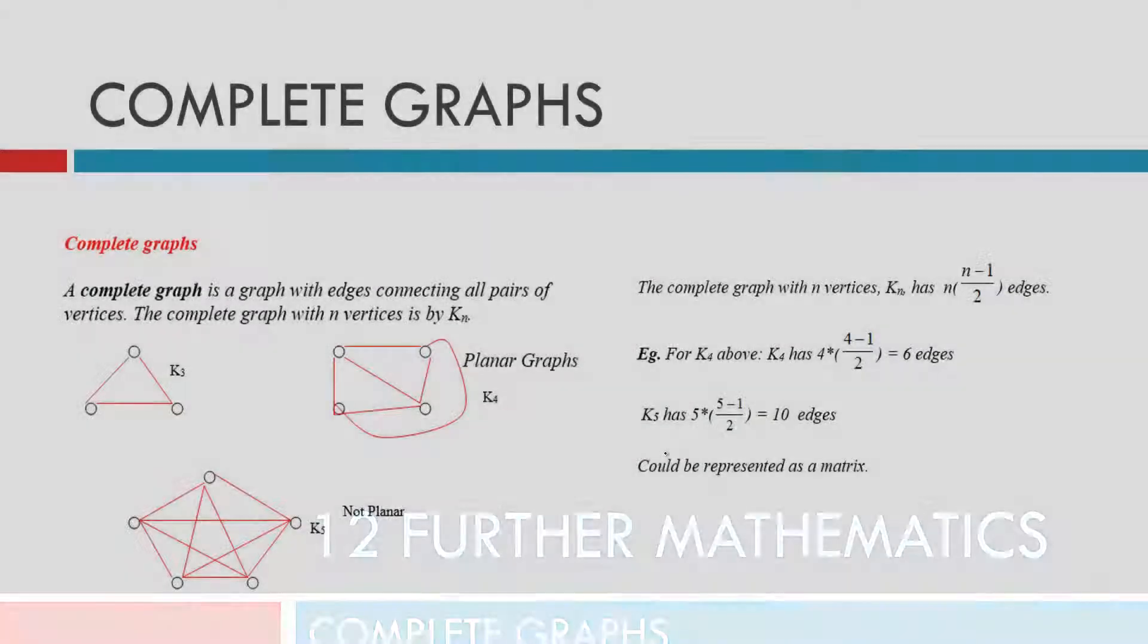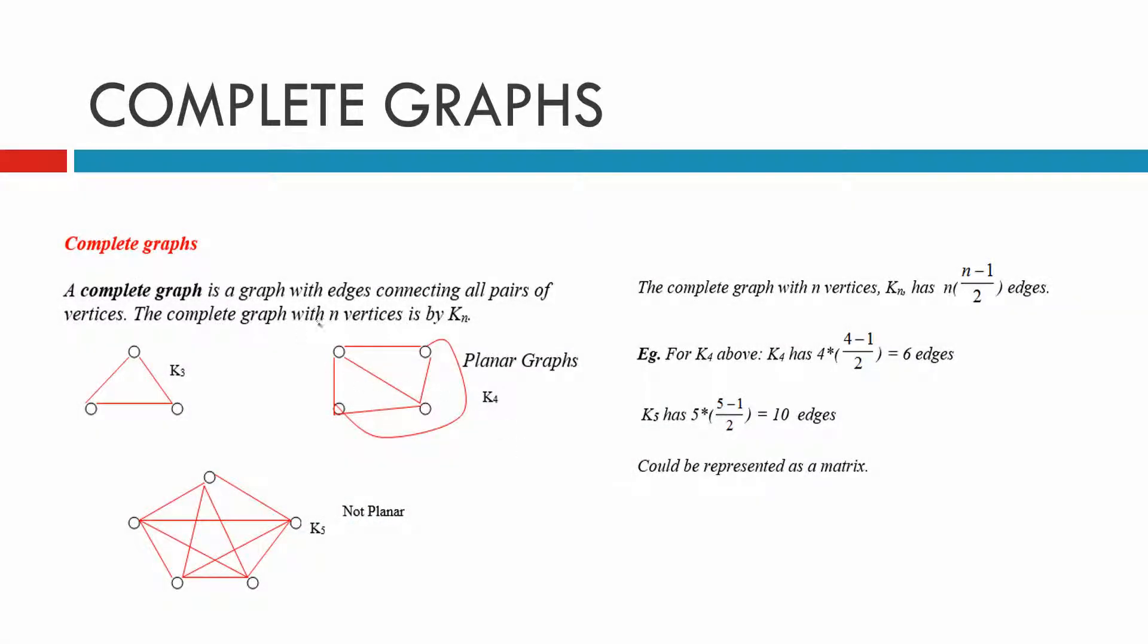Okay, complete graphs. The complete graph is a graph with edges connecting all pairs of vertices. The complete graph with n vertices is given by k with a little n.